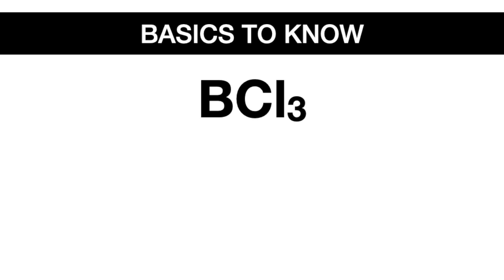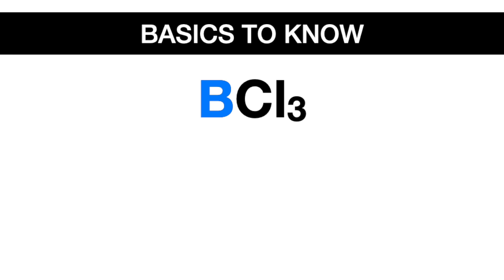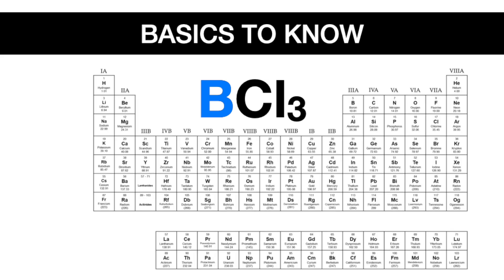When given a molecular formula, know that the atom with the lowest subscript number, or fewest amount of atoms in the molecule, is usually the central atom. So start by determining the number of valence electrons in the central atom. To do that, we'll use the periodic table, find boron, and then count from left to right in the same period or row until you get to boron. It has three valence electrons.